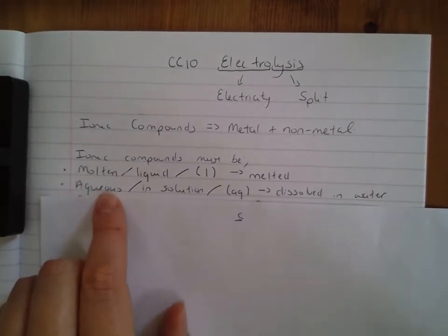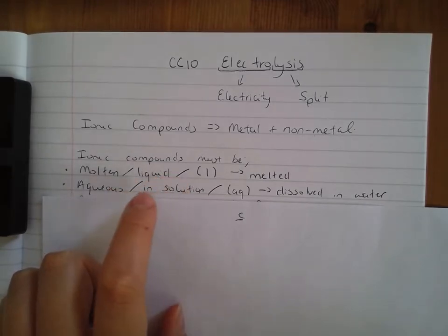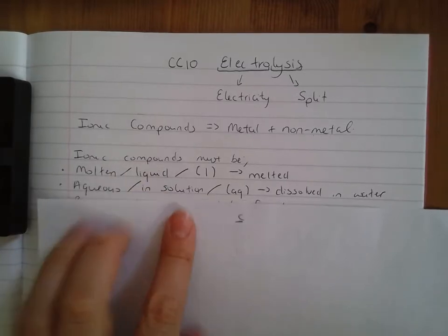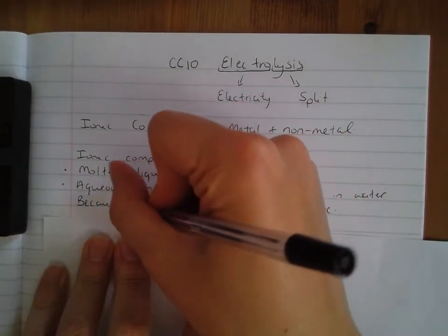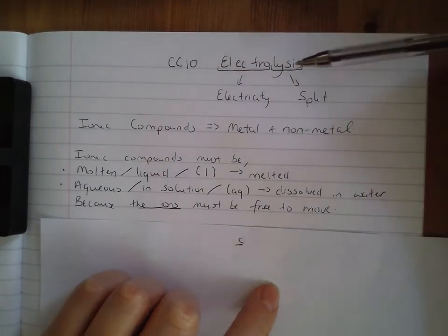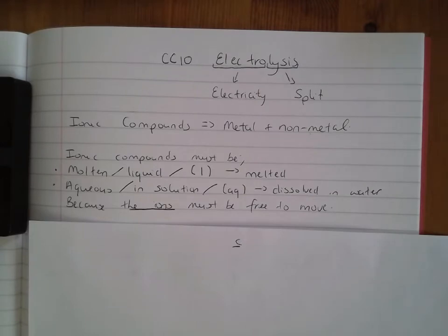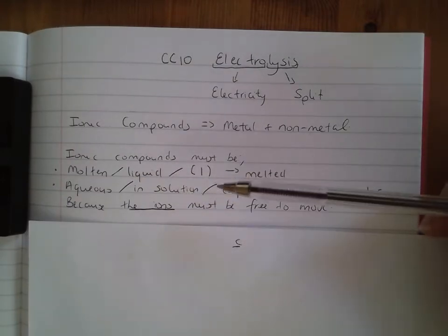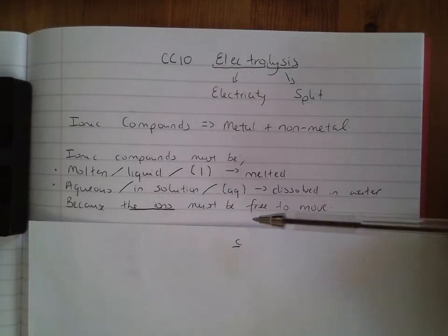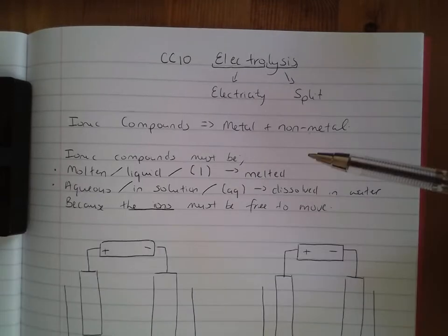Ionic compounds must be molten or aqueous because they must be able to conduct electricity. All ionic compounds contain ions, which are charged particles, but those charged particles have to be free to move. Particles in a solid are not free to move — they can only vibrate — so a solid ionic compound will not conduct electricity. You must turn it into a liquid by either melting it or dissolving it in water, so the ions are able to move and conduct electricity.